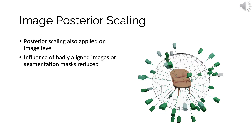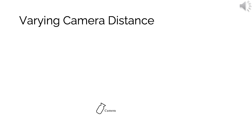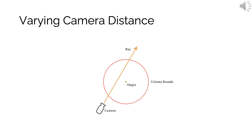This posterior scaling is not only applied to the camera multiplex but also at an image level, reducing the influence of poorly aligned images or noisy segmentation masks on learning our neural reflectance field. In our practical problem setting, cameras are not equidistant to the object. To account for this, we propose a flexible camera parametrization, where we define a volume bound around the coordinate system origin and detect the sampling range for a camera ray by casting an imaginary ray toward the origin and finding intersection points with the spherical volume bounds.